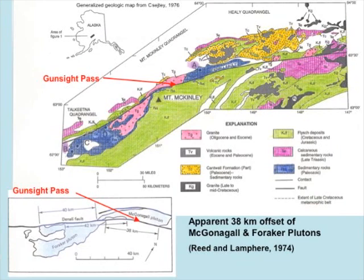Some of the best evidence for offset is the McGonagall and Foraker Plutons. Rita Lamphere in 1974 proposed that the Foraker Pluton was once joined with the McGonagall Pluton. They're both the same type of rock — a granodiorite essentially — both about the same age, approximately 38 million years old, with geometry suggesting they were once joined as a single pluton crossing the fault.